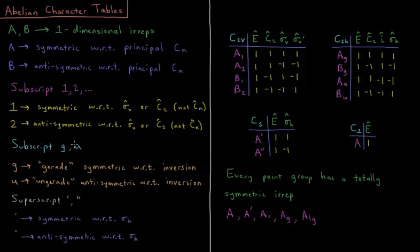A subscript G or U is covered elsewhere in this quantum chemistry and spectroscopy course. G meaning gerata, symmetric with respect to the inversion center, I. U ungerata, anti-symmetric with respect to inversion, so AG plus one, BG plus one, AU minus one, BU minus one.